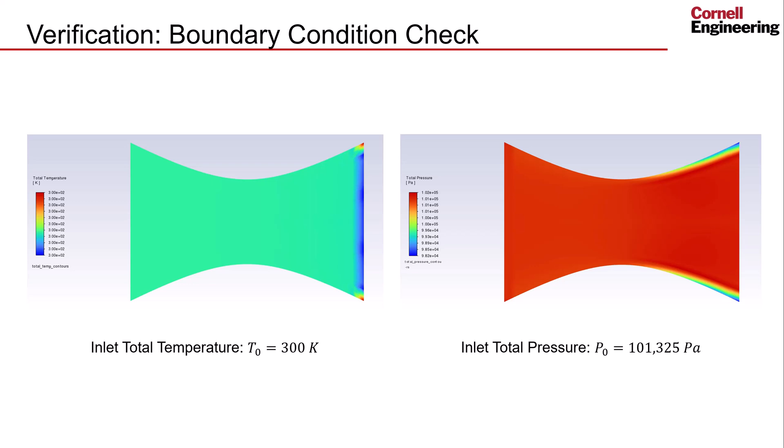Firstly, it is good to ensure that the boundary conditions were applied correctly by sampling the values along the boundaries. Looking at the total temperature and pressure plots, we can see that the values at the inlet match what is specified in pre-analysis. In this case, it is approximately conserved over the full domain.